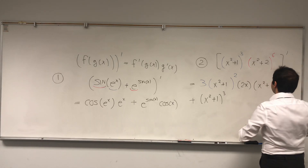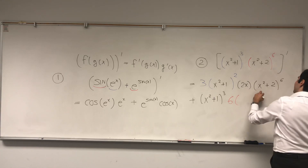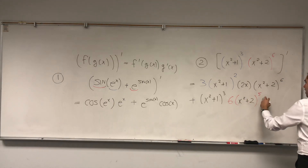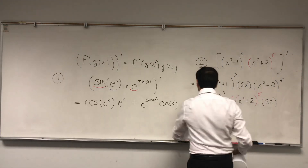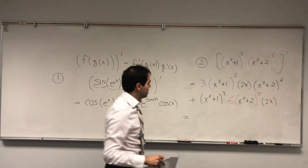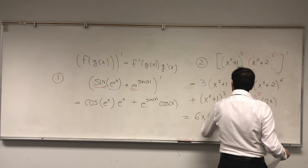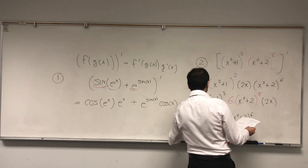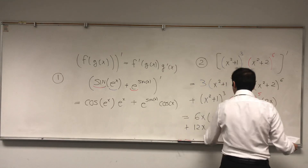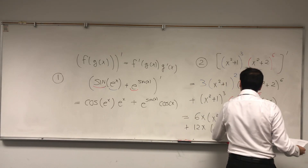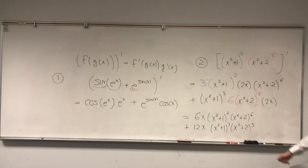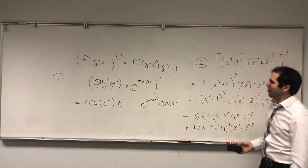To differentiate that, you get 6 times the fifth power — so x squared plus 2 to the fifth power — times the derivative of that, which is 2x. And then if you want, you can simplify this a little bit. This becomes 6x times x squared plus 1 squared, times x squared plus 2 to the sixth, plus 12x times x squared plus 1 cubed, times x squared plus 2 to the fifth. And if you want, you can factor out x squared plus 2 to the fifth, but I think for purposes of this problem, this is enough.